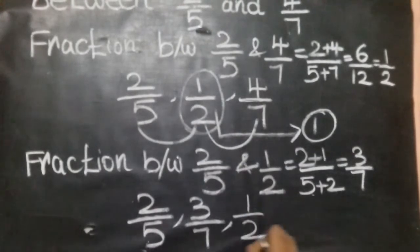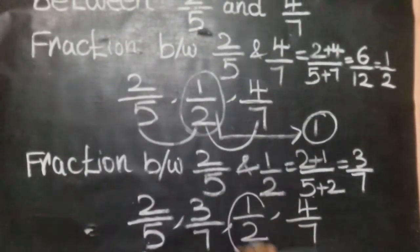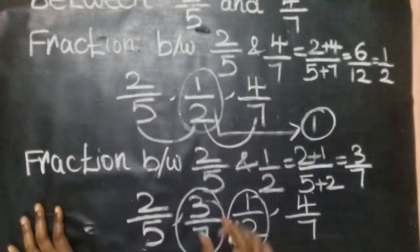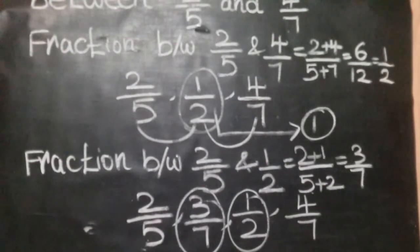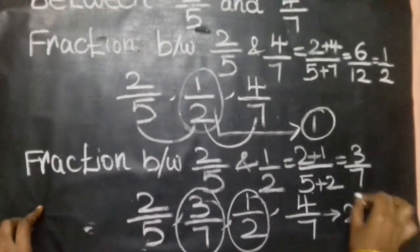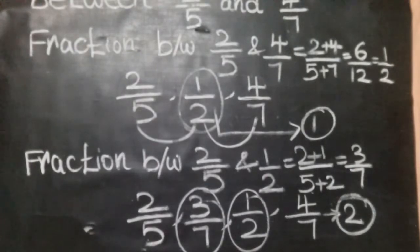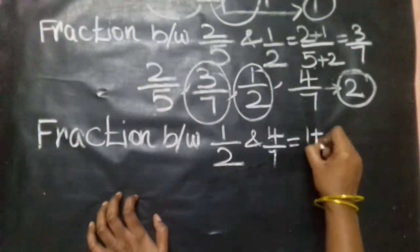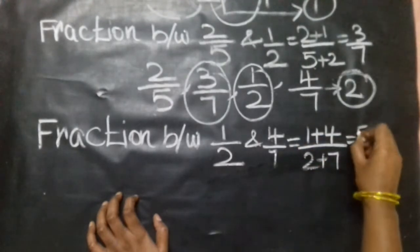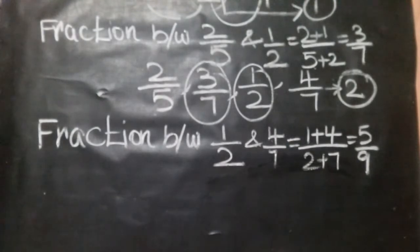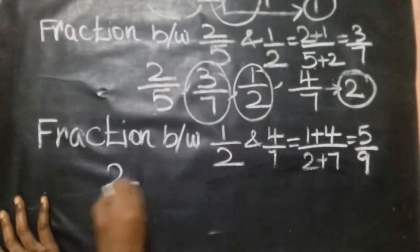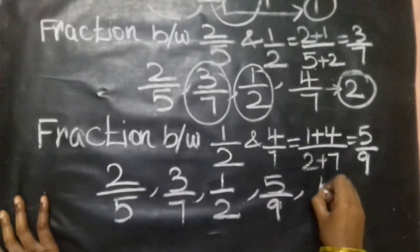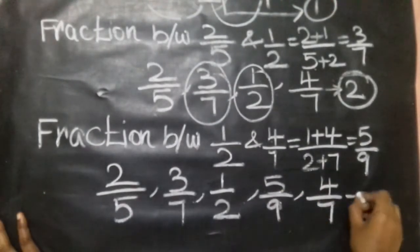Next, find the fraction between 1/2 and 4/7. Apply the formula: (1+4)/(2+7) = 5/9. So 5/9 lies between 1/2 and 4/7. The final answer: three fractions between 2/5 and 4/7 are 3/7, 1/2, and 5/9.